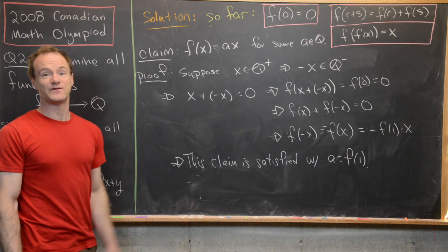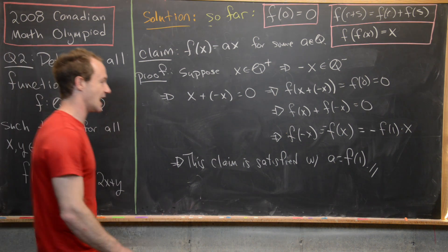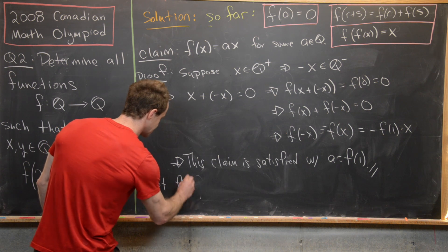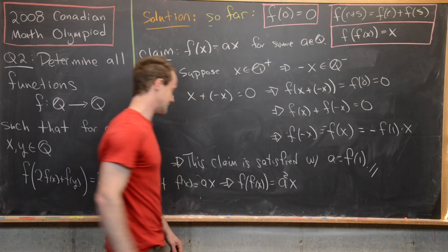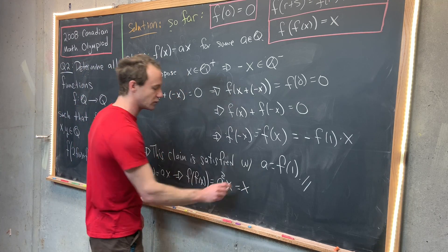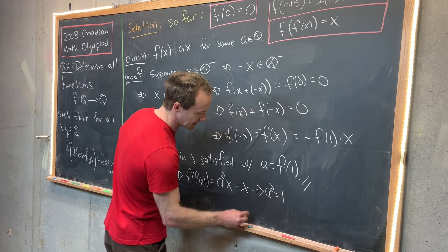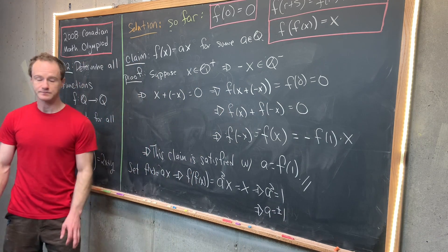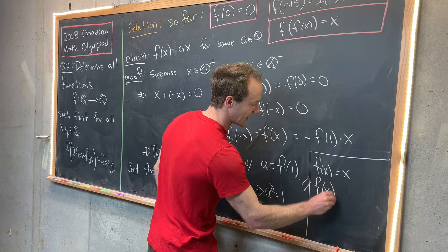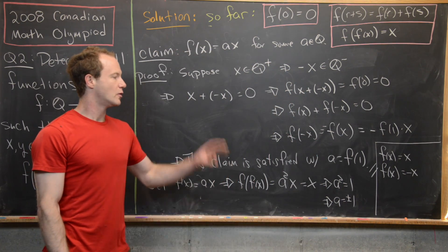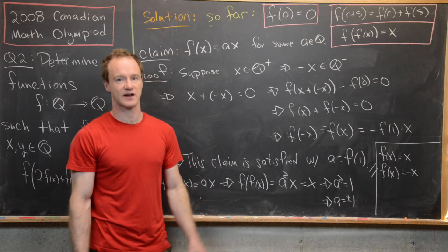Now we can finish quickly using f of f of x equals x. If f of x equals a times x, then f of f of x equals a squared times x, and we want that equal to x for all x. So a squared equals 1, meaning a equals plus or minus 1. Therefore the only two possibilities are f of x equals x and f of x equals negative x. We should verify that both satisfy the original functional equation — that's straightforward to check — and that completes the solution.